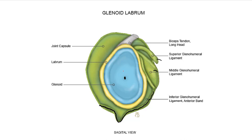SLAP stands for Superior Labrum Anterior to Posterior, but sometimes you get a lesion that starts more posterior-superior and works its way around the back. It's not truly an isolated superior labral phenomenon — it's more of a posterior rim phenomenon — yet this still gets the moniker SLAP 8. So there's going to be a fair amount of variability with regard to quadrant.